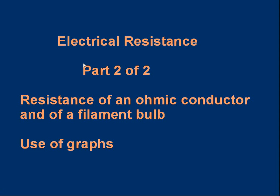Welcome to part two of the lesson on resistance. In this part we're going to look at the resistance of an ohmic conductor — one that obeys Ohm's law — and a non-ohmic conductor. We're going to use a filament bulb as an example, and we'll find out how we can use graphs of current versus voltage to help us work out resistance.